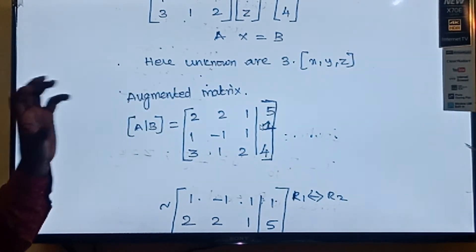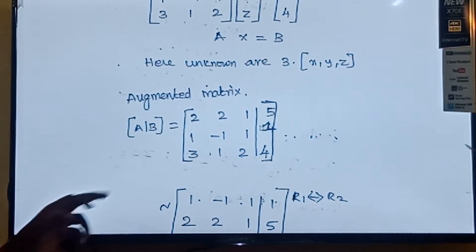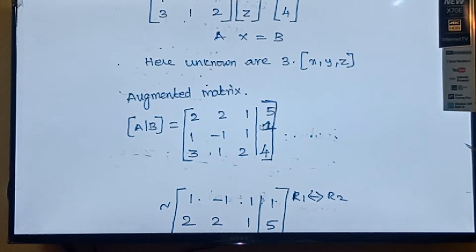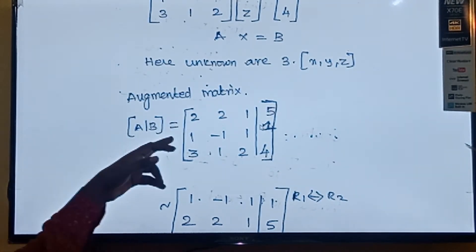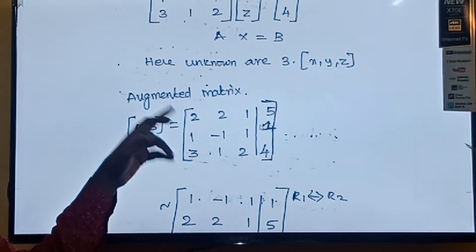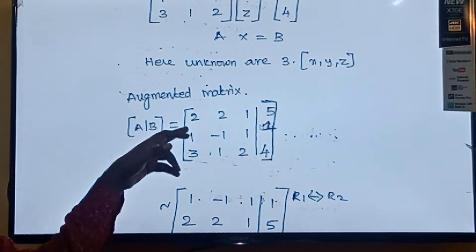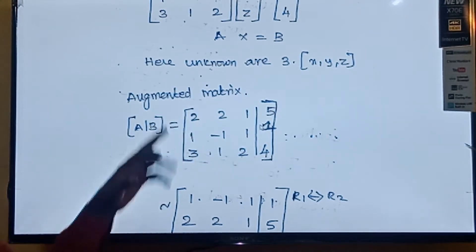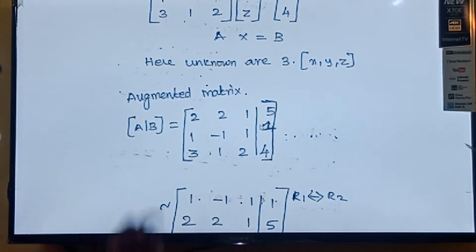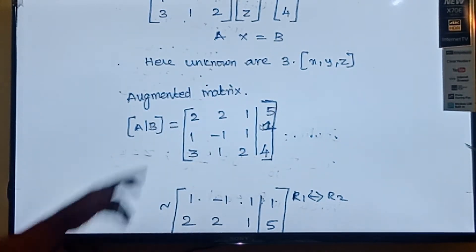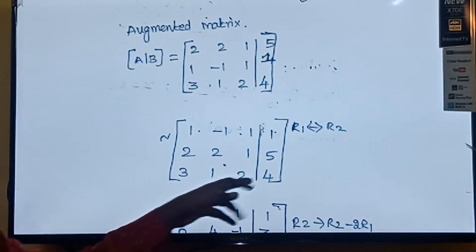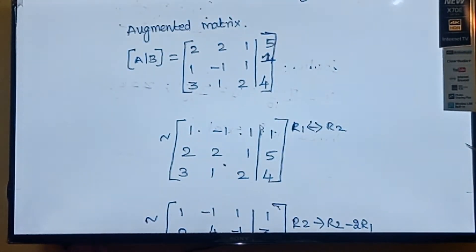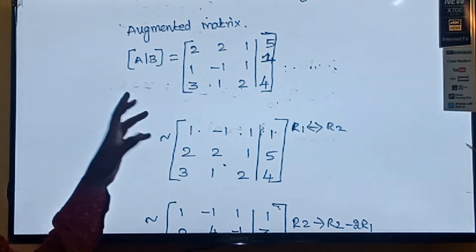The first element of the matrix must be 1. But here the first element is 2, so I am making an interchange of R1 and R2. Now R1 becomes the old R2 value: 1, minus 1, 1, 1. And R2 becomes the old R1 value: 2, 2, 1, 5. R3 remains the same: 3, 1, 2, 4. So now the first row first element is 1.